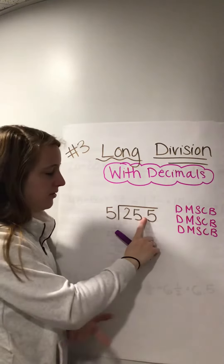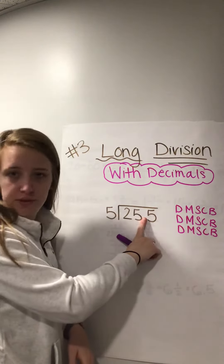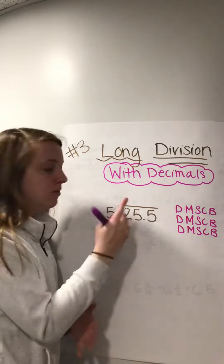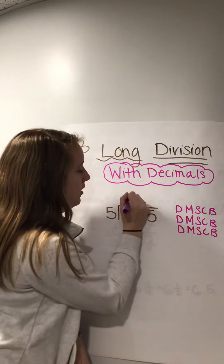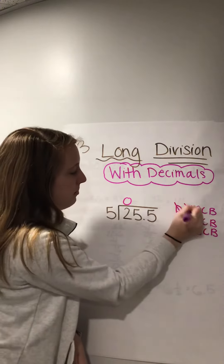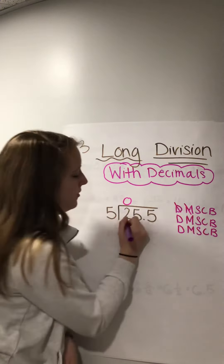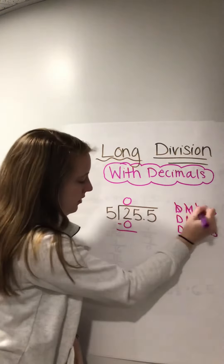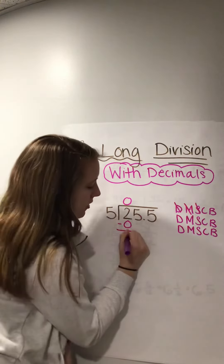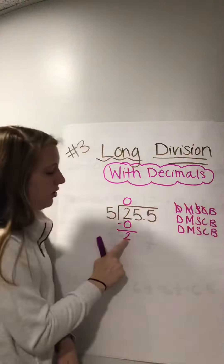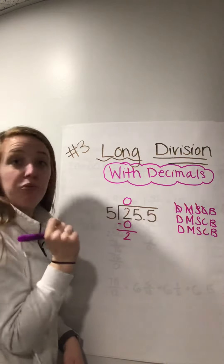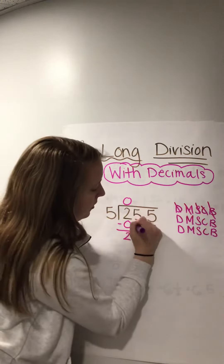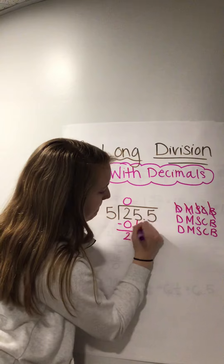So solve it like it was 255. How many times can five go into two? Zero. Divide. Multiply — zero times five is zero. Subtract — two minus zero is two. Check: two is less than five, we are good. And bring down your next number, which is a five.